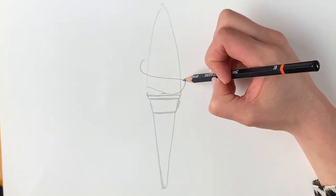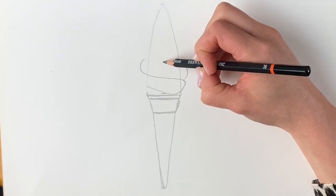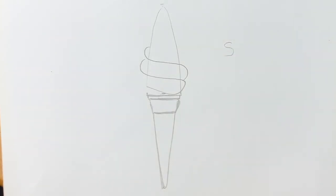Like this. Then we've got another big dollop on top of that. It's going to come up. These are like S shapes if you can imagine, just like that.